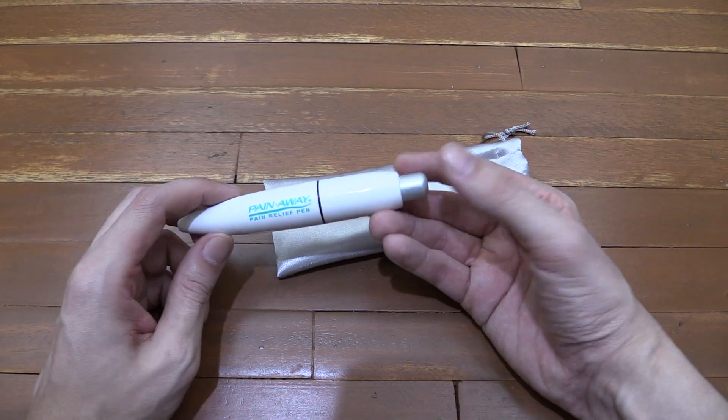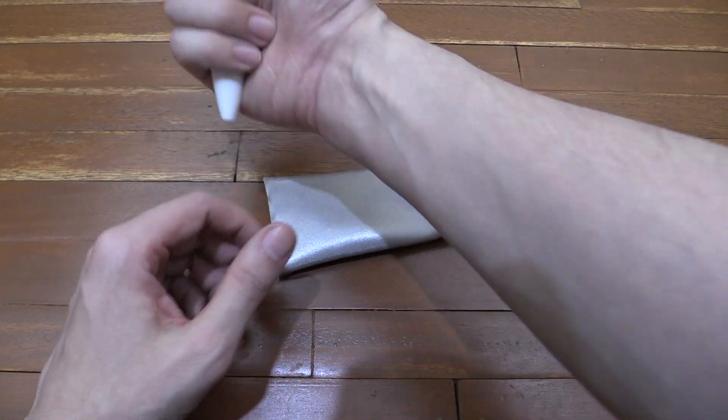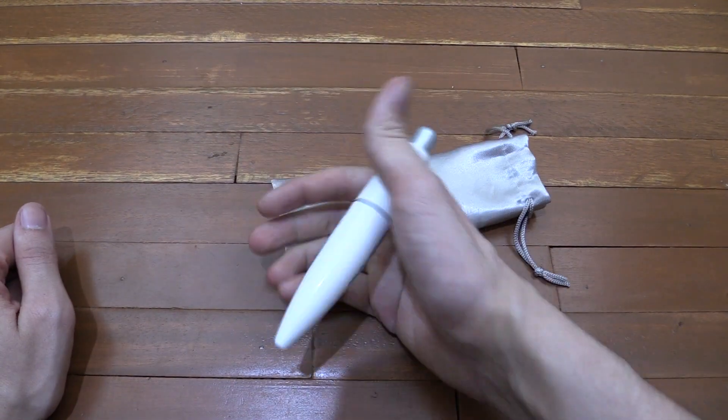Their advice is that if you don't want to follow acupoints, then use it directly where the pain is. For instance, if you have pain on your elbow, you can use it around that area.